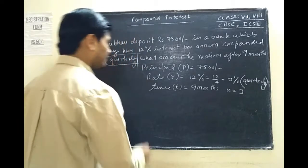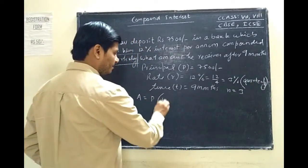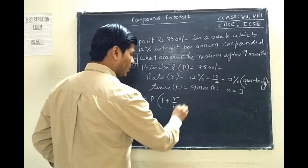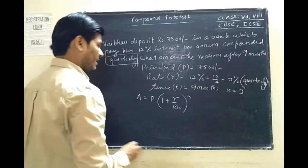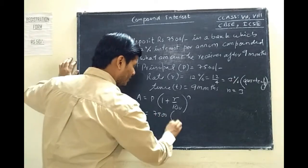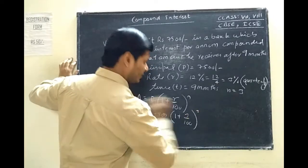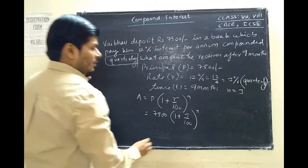So n becomes 3. Now to find the amount, we use the formula: Amount = P(1 + r/100)^n. Putting the values: 7500 times (1 + 3/100) to the power 3.